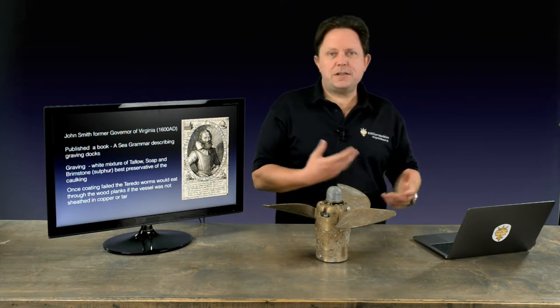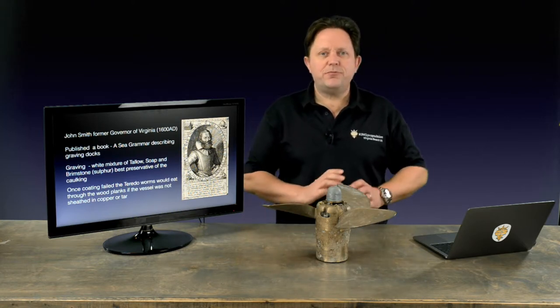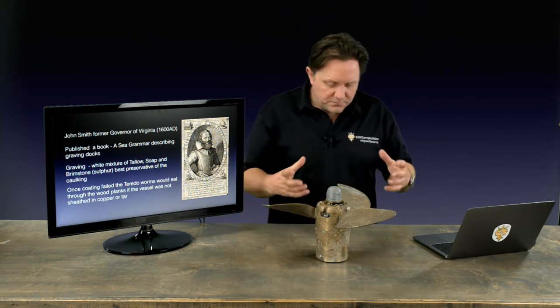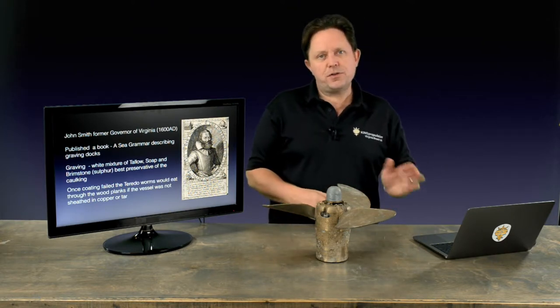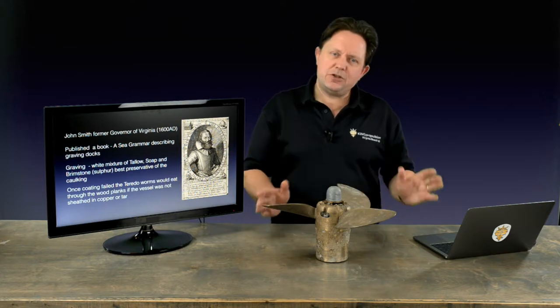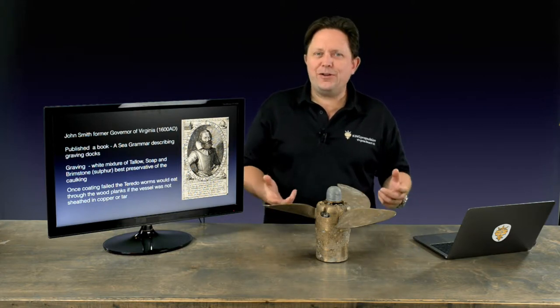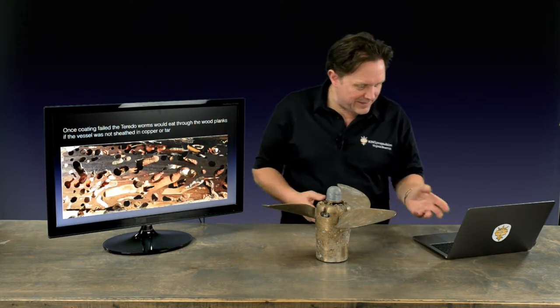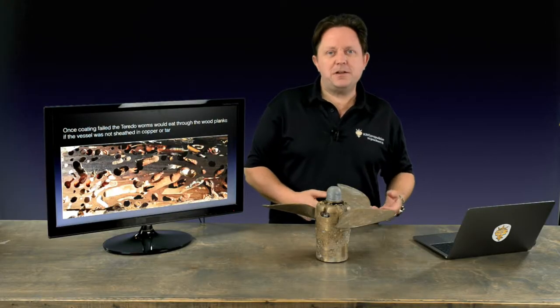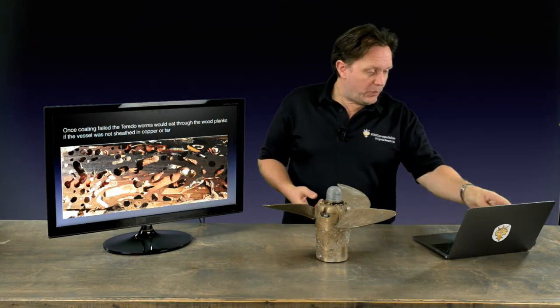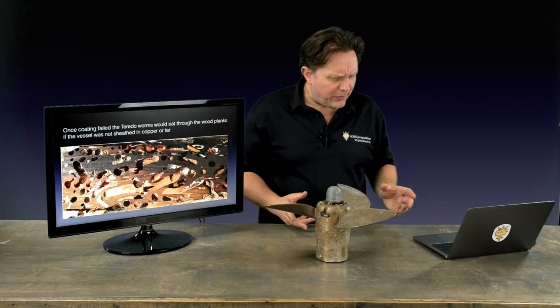So in 1600, 1700, when the sailing ships were really prevalent, this was a big problem. So they would use this graving material with tar and also with copper sheeting to protect the ships. So it was a very early form of antifouling. And this is what the Teredo worm can do. And there's so many accounts in history of ship's hulls being penetrated and failing because the worms just go absolutely through it.